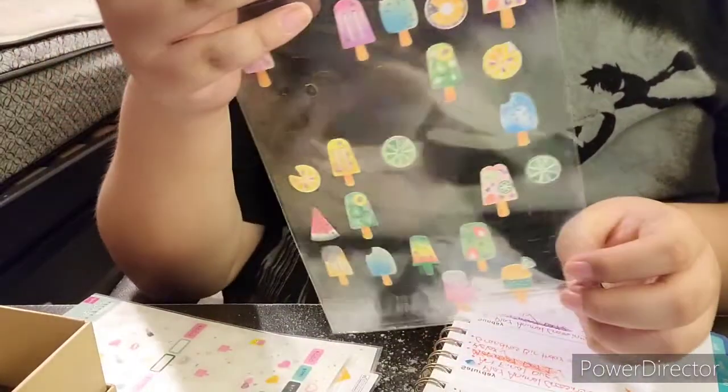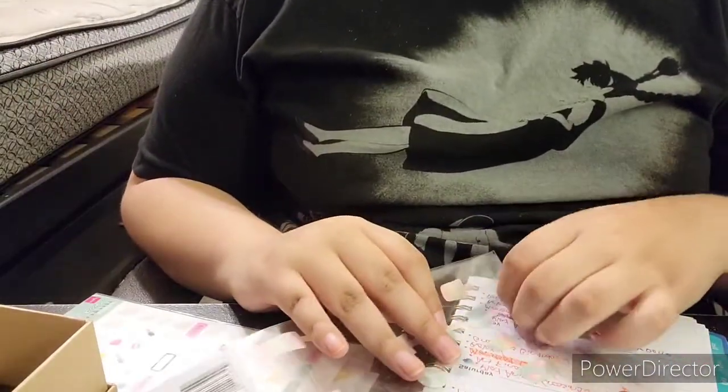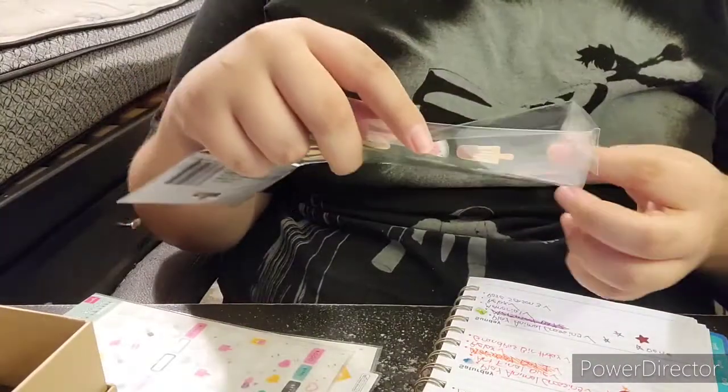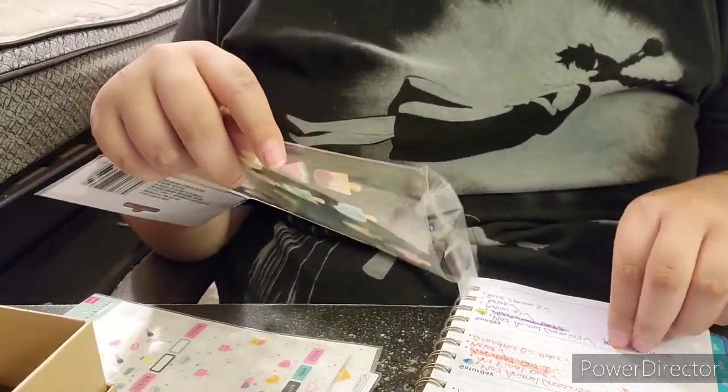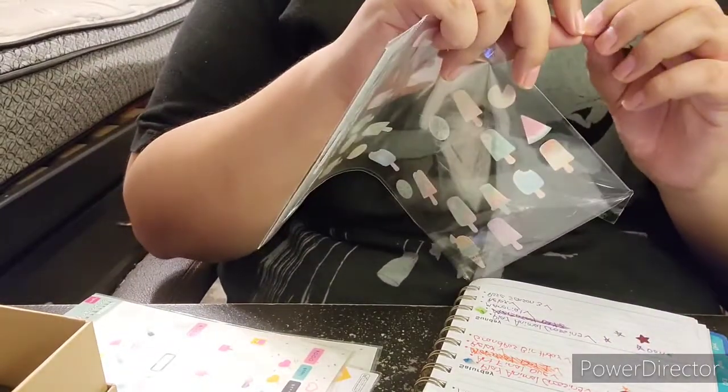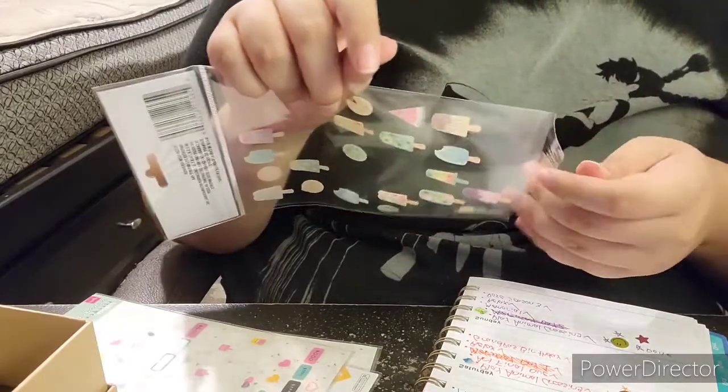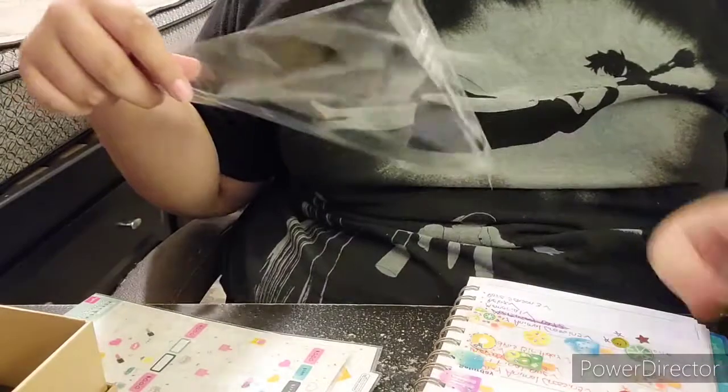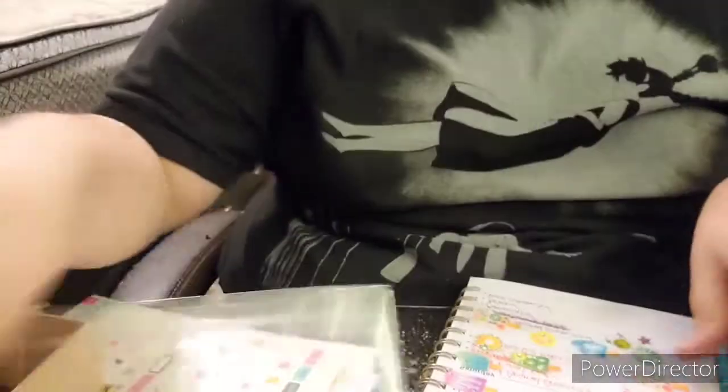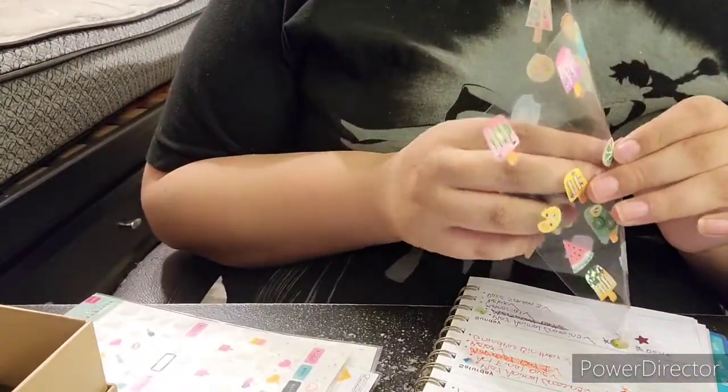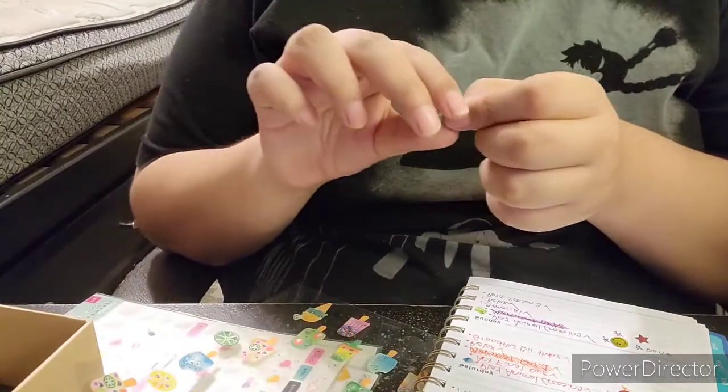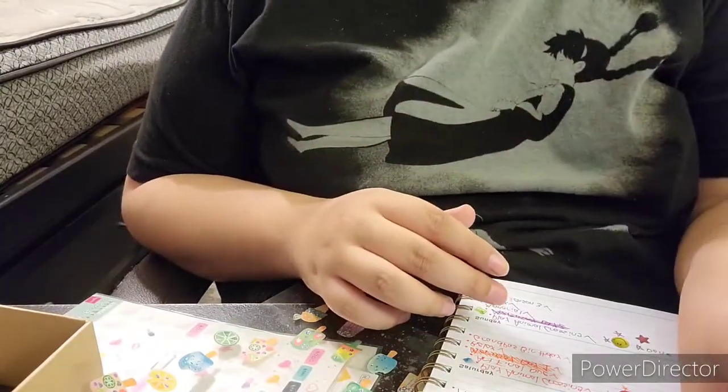And then I have these popsicle stickers. I think I'll put a little tonkatsu. Oh my god, I'm so sorry, my Facebook. I think I'll put one of these limes. And there we go, and that's what it looks like.